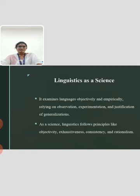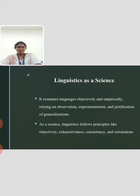The next topic is Linguistics as a Science. As Linguistics is the scientific study of language, it examines languages objectively and empirically, relying on observation, experimentation and justification of generalizations. As a science, Linguistics follows principles like objectivity, exhaustiveness, consistency and rationalism. Moreover, Linguistics is the science of language and linguists are scientists who apply the scientific method to questions about the nature and function of language.